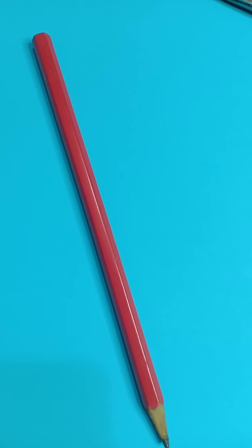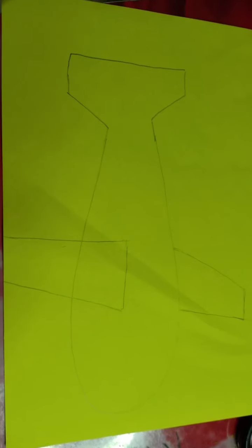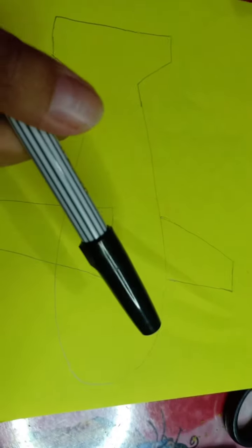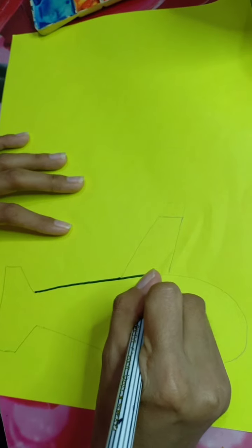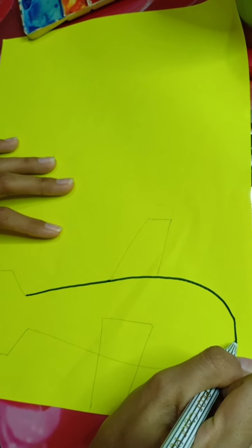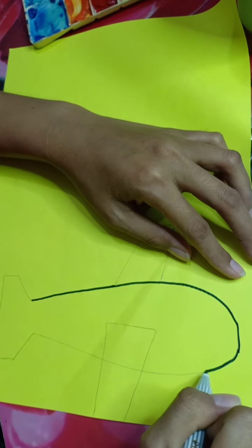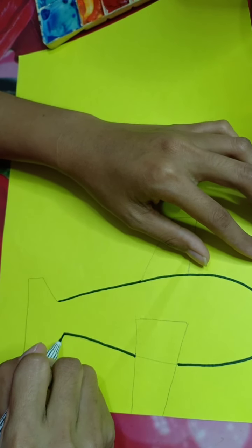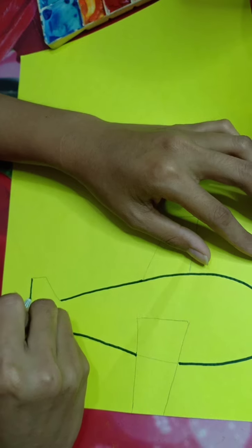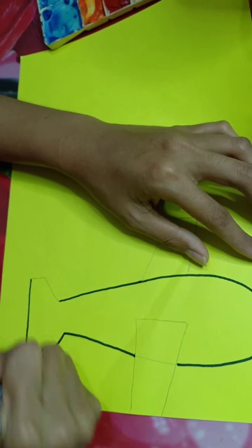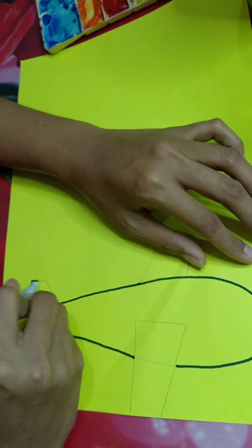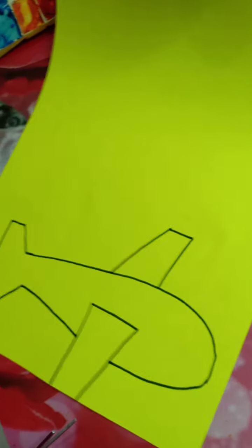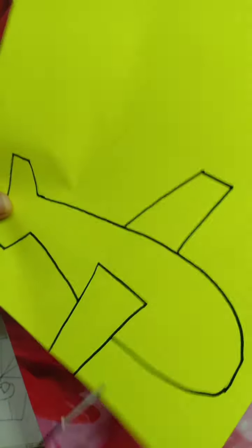I will show you how to do it. Here's an airplane picture. Now I will trace it with black pen. Look at it like that. Now I will cut with scissors.